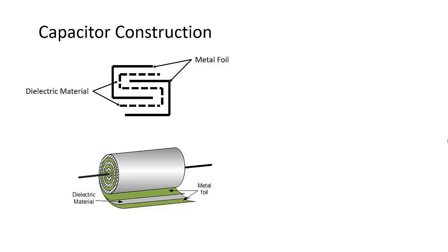The dielectric material keeps the electricity from flowing from one foil strip to the other until it has reached the amount of electrons it is designed to hold, and then it releases them across the strip.